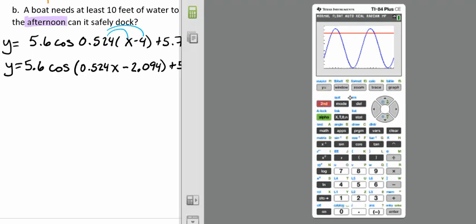We will hit second, trace, because that's our calculate feature. We'll go down to intersect, option number 5, and hit enter. We're going to have to do this two times. We're on the left-hand side. It's asking us for the first curve. We're on our first curve, which is our cosine curve. Then here we have our linear line for 10 feet. We'll hit enter there.